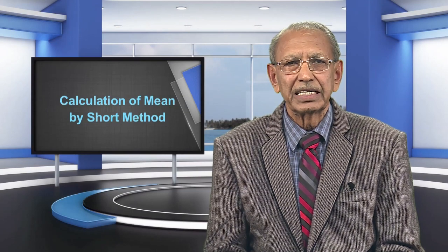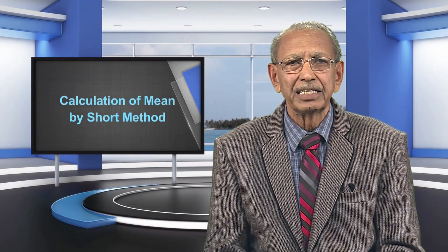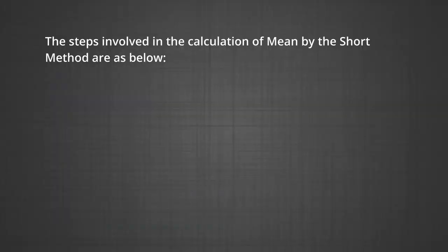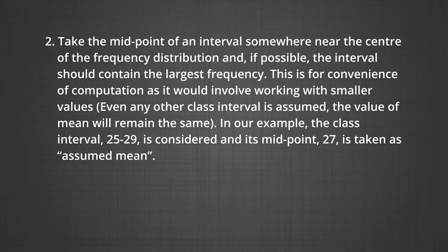In the short method, we guess or assume a mean and later apply a correction to the assumed mean in order to obtain the actual mean. The steps are: Number 1, arrange scores into a frequency distribution and find the midpoint of each class interval. Number 2, take the midpoint of an interval near the center of the distribution — preferably the interval with the largest frequency — as the assumed mean. In our example, class interval 25–29 with midpoint 27 is taken as the assumed mean.